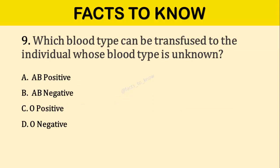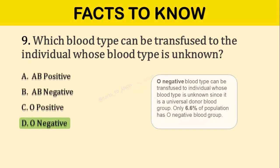Question number nine: Which blood type can be transfused to an individual whose blood type is unknown? The correct answer is option D: O negative. It is the universal donor blood group. Only 6.6% of the population has O negative blood group.